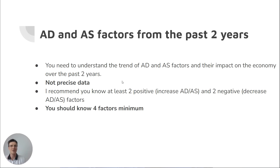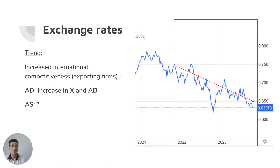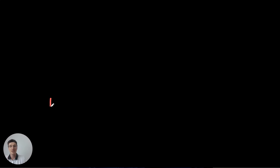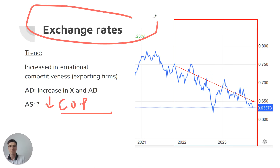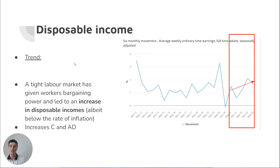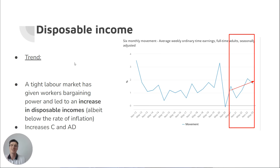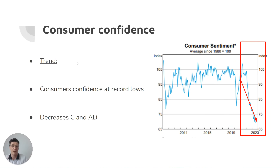You definitely don't need to know the precise data — you don't need to know that consumer confidence was 62.7 index points or that the exchange rate was 63.8 US cents. Just know the trend. The exchange rate has been depreciating, which is good for international competitiveness, so good for aggregate demand — a positive AD factor. But it's actually a negative AS factor because firms who import intermediate goods and capital from overseas see their cost of production increase. Disposable incomes have been increasing, which would stimulate AD — another positive AD factor. Consumer confidence has very clearly been trending down to its lowest point ever because of the RBA's tightening cycle and how quickly they've increased interest rates, so a negative AD factor.